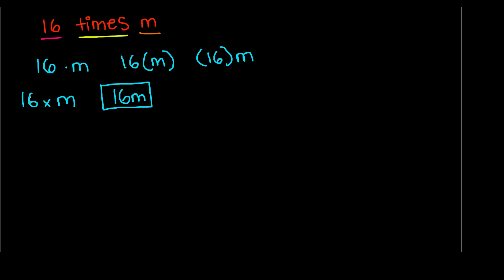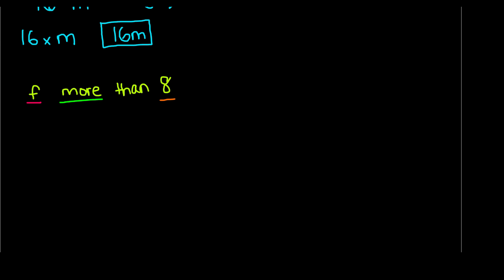Our next example involves addition. Let's say we have 'f more than 8'. We underline our key terms: our variable is f, our number is 8, and the operation is 'more than', which tells us we're adding them together. So our operation is addition. To write this as an expression, we know we are adding f to 8, so we write f + 8. We can also write it as 8 + f because in addition, order doesn't change the answer.